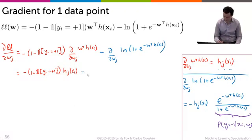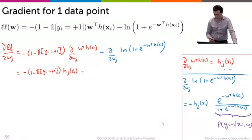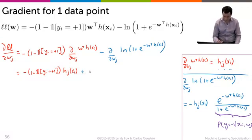And from the second term, the blue term here, you get minus, and then there is another minus, and so you end up with a minus minus equals plus h_j of x_i that multiplies the probability that y is equal to minus 1, given x_i and w.